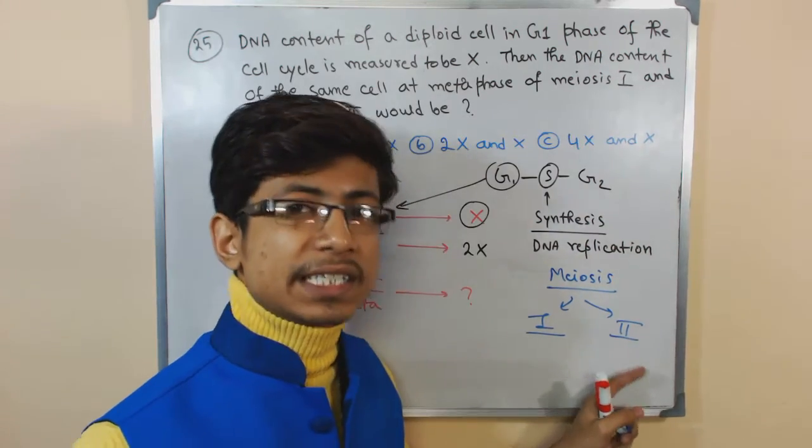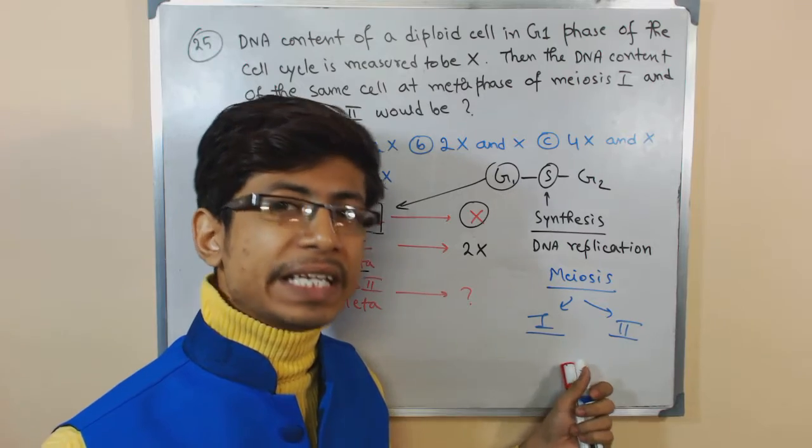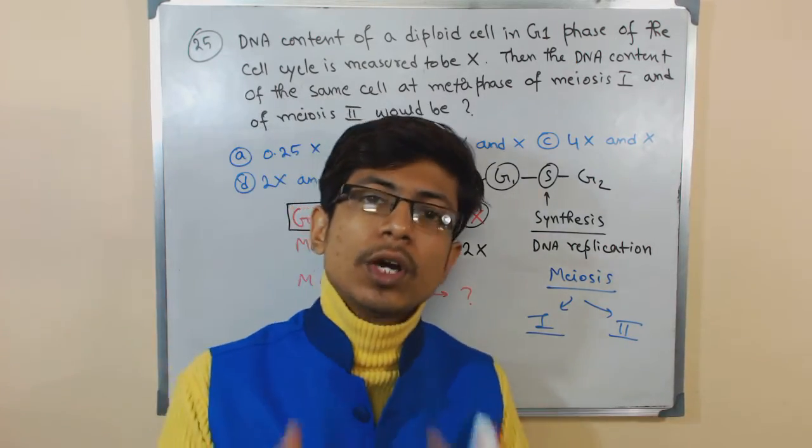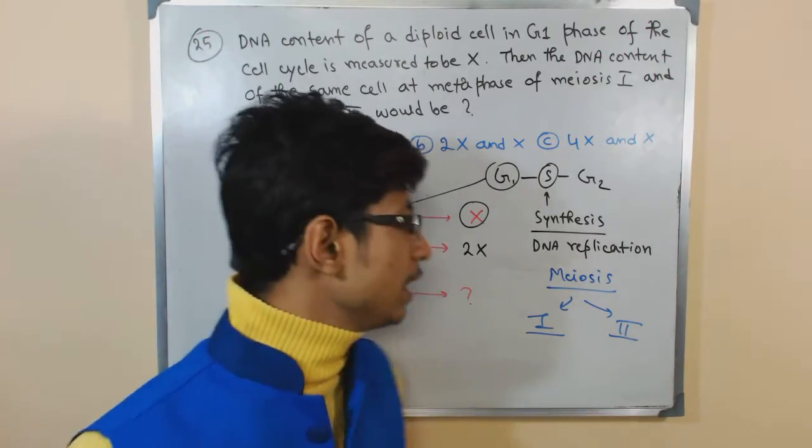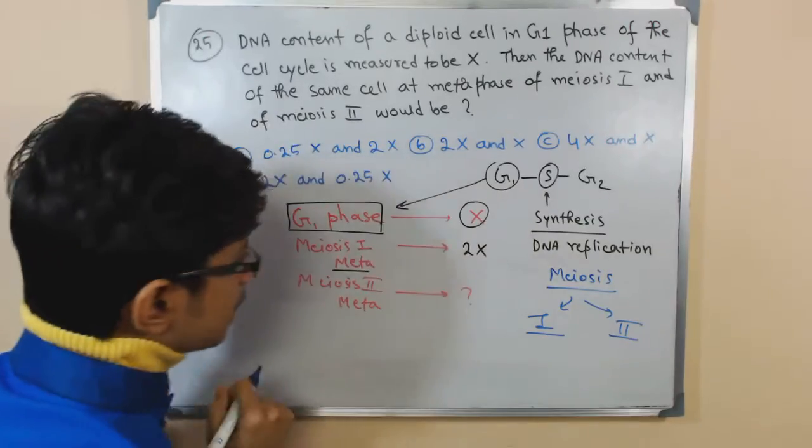So meiosis 2 is just like mitosis. But meiosis 1 is completely unique. In meiosis 1, the homologous pair of chromosomes will be segregated. But in meiosis 2, the sister chromatids will be segregated.